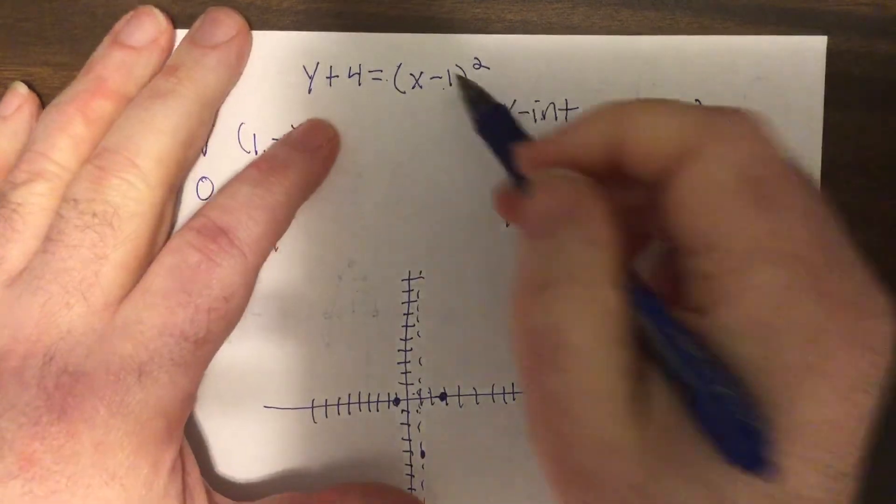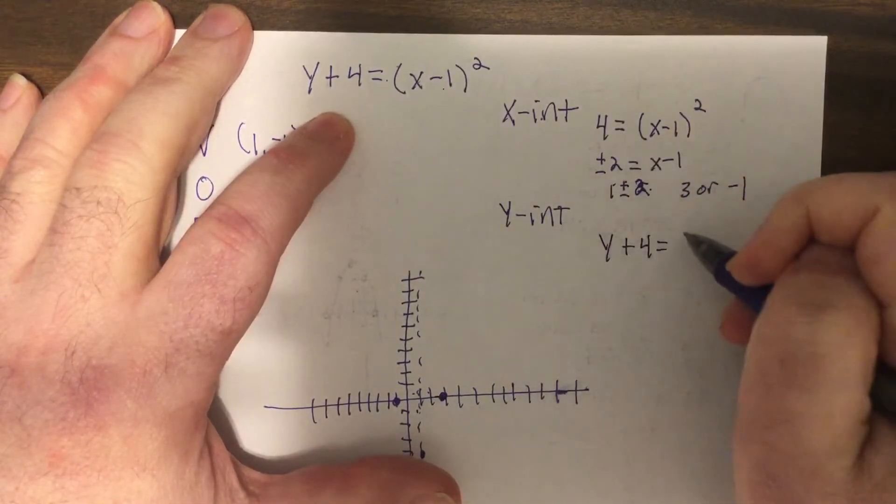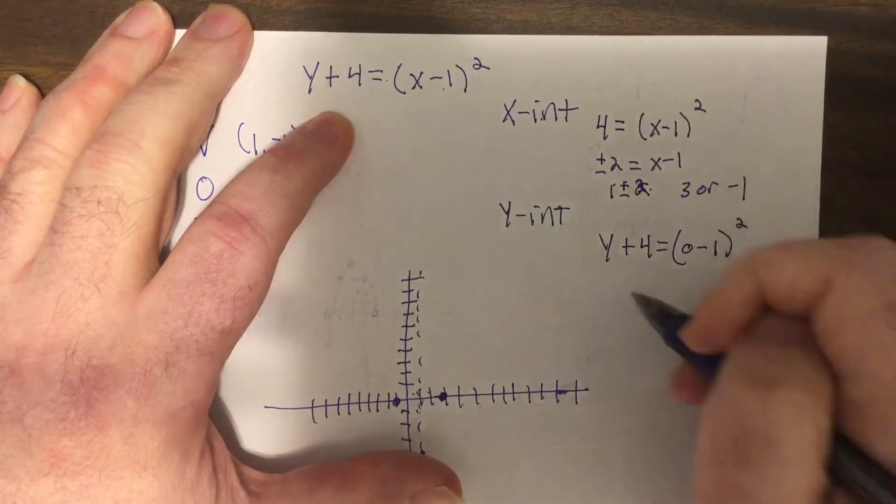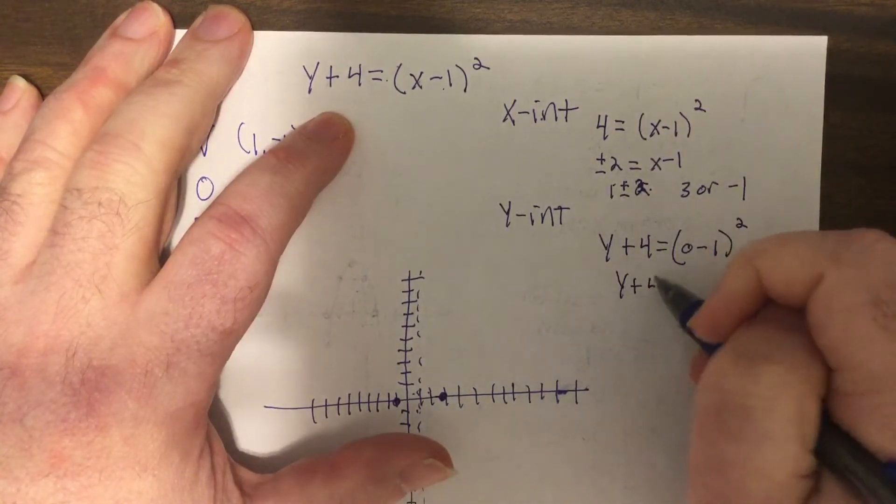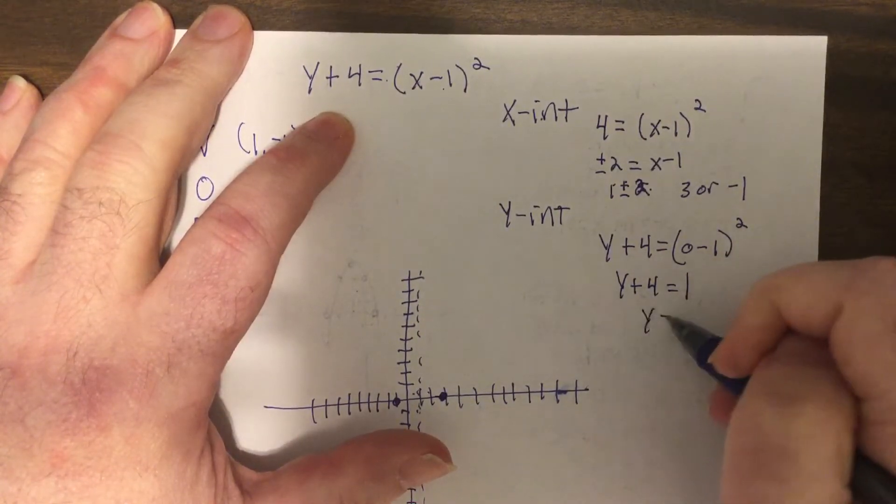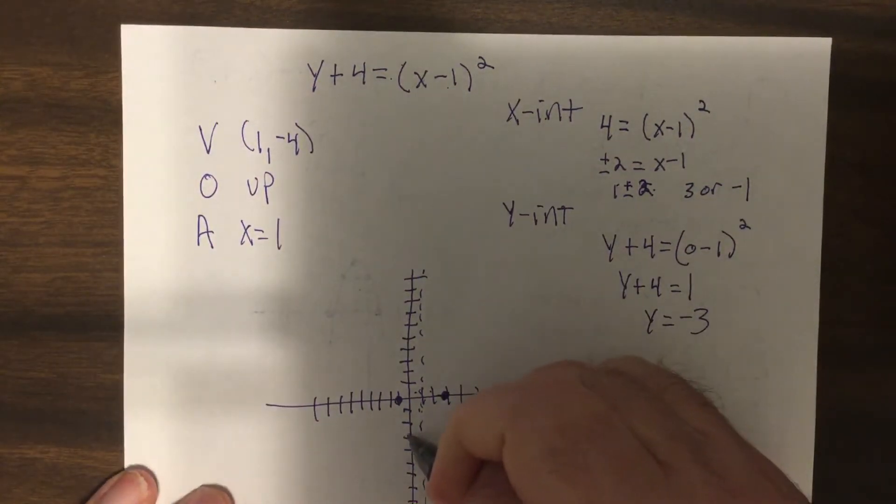Y intercept. Put zero in for X. So it'd be Y plus four equals zero minus one squared. Negative one squared is one. Y plus four is one. Subtract four. Y equals negative three. So I'm going to put a dot at negative three.